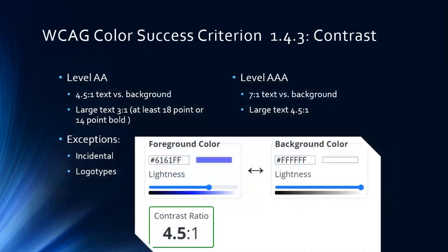Let's talk about the WCAG color success criterion 1.4.3, which addresses contrast. The minimum required is Level AA. For regular size text — that's 18-point non-bold, or bold text less than 14-point — the contrast ratio between text and background should be 4.5 to 1. The color contrast ratio is on a scale of 1 to 21, and black and white together is 21 to 1, which is the ultimate perfect contrast ratio. The criteria allows a minimum standard, and there's an example here of a 4.5 to 1 ratio using blue and white.